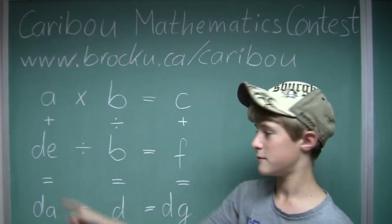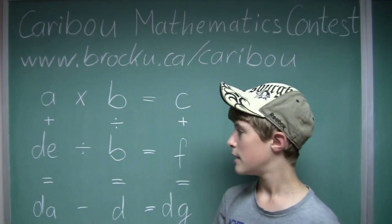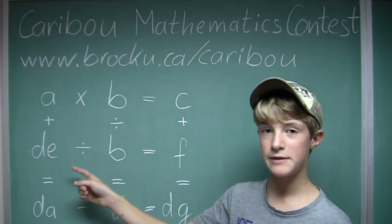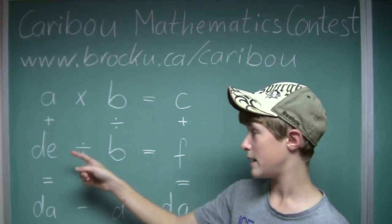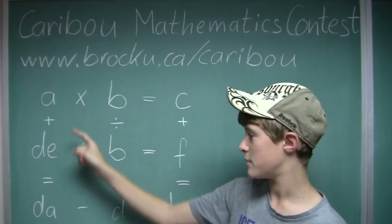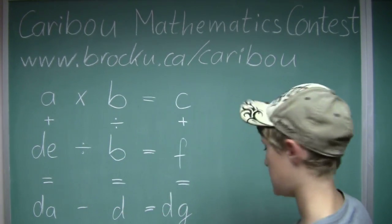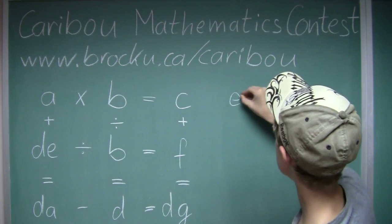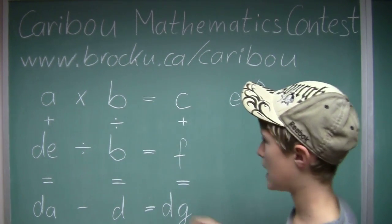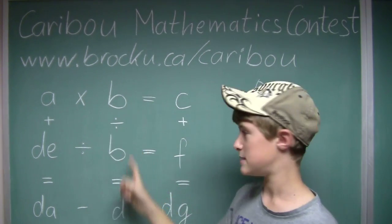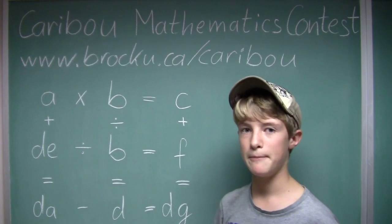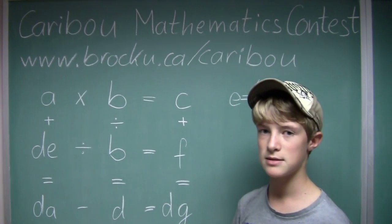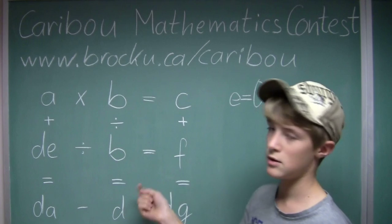So now we would start on the left. a plus dE equals dA. e would have to equal 0, because it's like saying a plus e equals a. So e equals 0. Now we would look at this equation: b divided by b equals d. d would have to equal 1, because a number divided by itself equals 1.